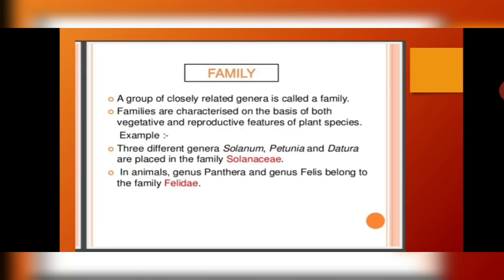The next level is family. A group of closely related genera come together to form a family. We are going up in the hierarchy: species, genus, and now family. Families are characterized on the basis of both vegetative and reproductive features. For example, three different genera — Solanum, Petunia, and Datura — are placed in the family Solanaceae. The suffix -aceae is used for plant family names. In animals, Panthera and Felis — the cat family — belong to Felidae, which is actually called the cat family.